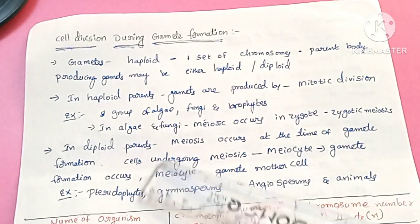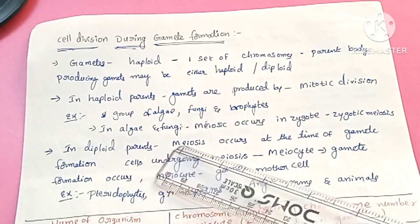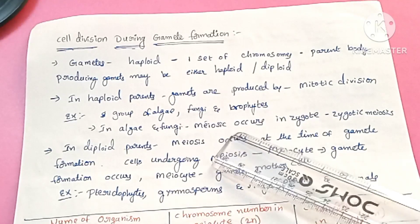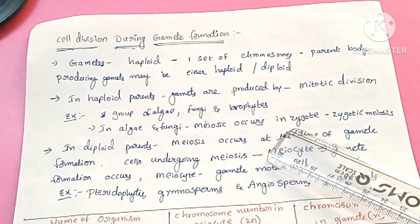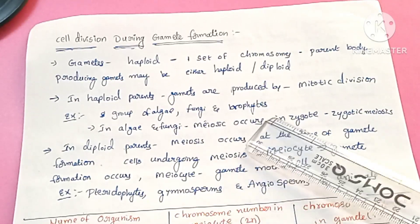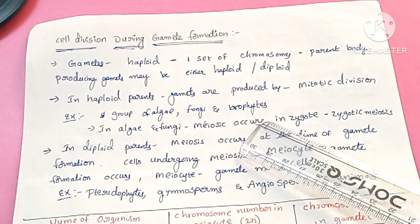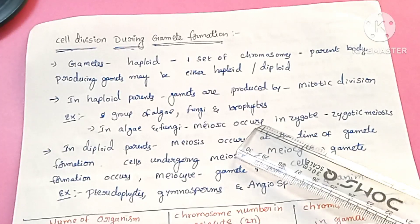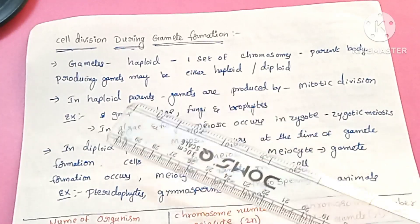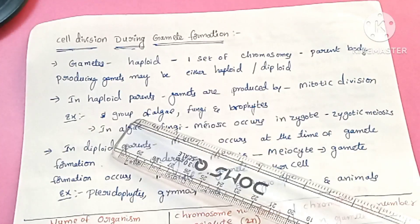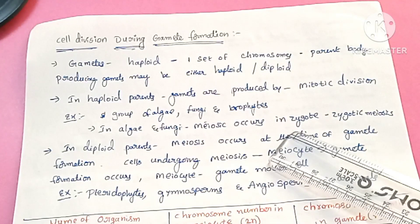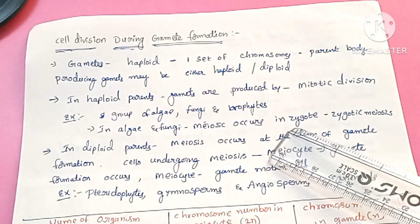In organisms such as fungi and some others, haploid gametes are produced and upon fusion they form a diploid zygote. The gametes are in haploid condition and after fusion the resulting zygote is in diploid condition.